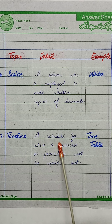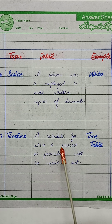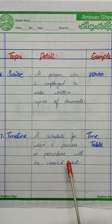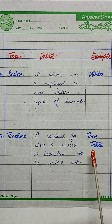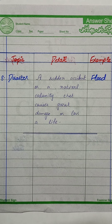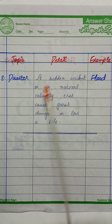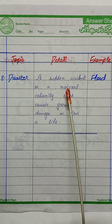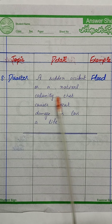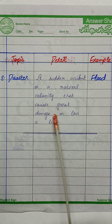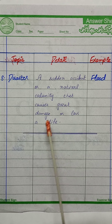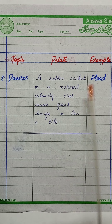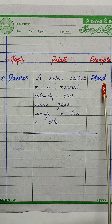Our seventh word is timeline. The detail is a schedule for when a process or procedure will be carried out. The example is timetable. Our eighth definition is disaster — a sudden accident or a natural calamity that causes great damage or loss of life. Example is flood.